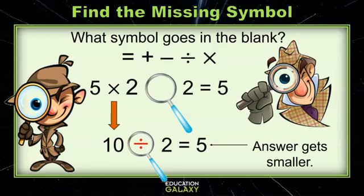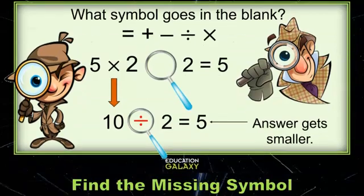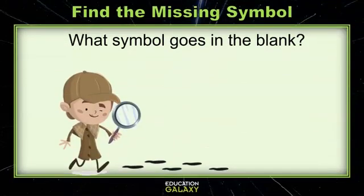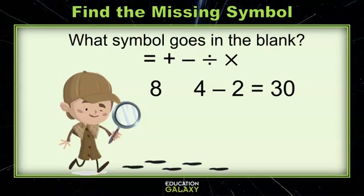Good job, detectives. Let's try another one. What symbol goes in this blank? 8 something 4 minus 2 equals 30.